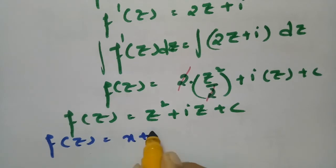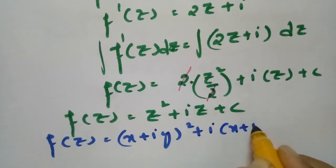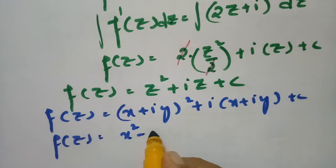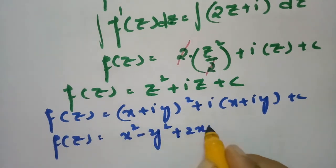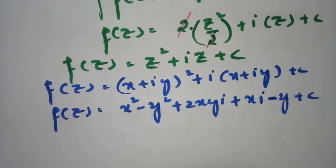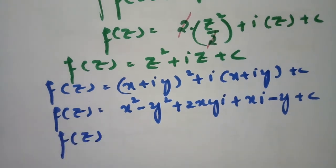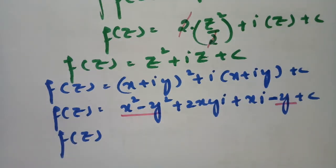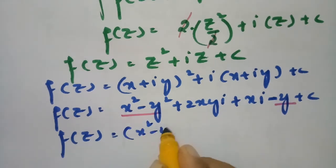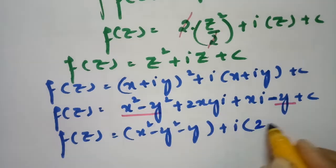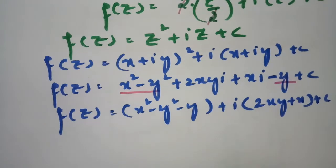Expanding f(z) = z² + iz + c: substituting z = x + iy gives (x + iy)² + i(x + iy) + c. Expanding (x + iy)² = x² - y² + 2ixy, and i(x + iy) = ix - y. So f(z) = (x² - y²) + 2ixy + ix - y + c.